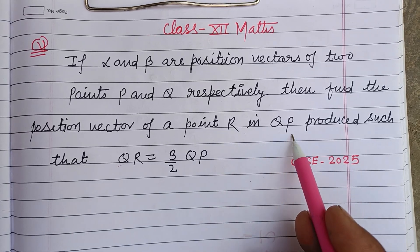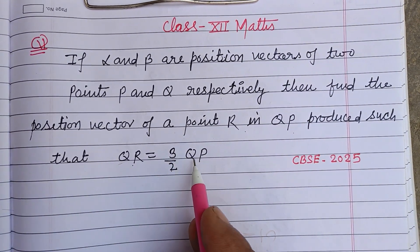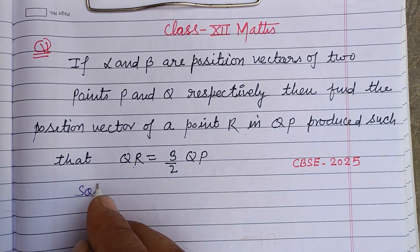vector of a point R in QP produced such that QR equals three by two QP. So students, here